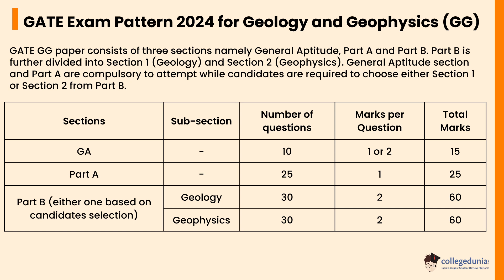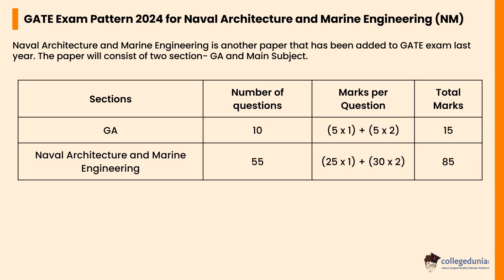Let's check the GATE exam pattern 2024 for Geology and Geophysics. This paper has three sections: General Aptitude, Part A, and Part B. Part B is divided into Section 1 (Geology) and Section 2 (Geophysics). General Aptitude and Part A are compulsory, while candidates choose either Section 1 or Section 2 from Part B. General Aptitude has 10 questions for 15 marks; Part A has 25 questions for 25 marks; Part B has 30 questions for 60 marks.